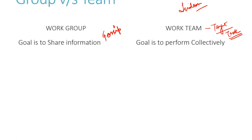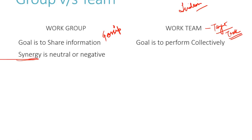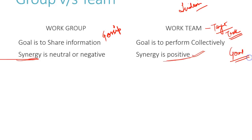The next point is synergy. In a group, synergy is either neutral or completely negative. On the other side, when we talk about a team, synergy should always be positive. This positive synergy is very important because to reach a particular goal, all people have to be positive and focused. Groups ke saath mandatory nahi hai, kyunki groups bahut informal in nature hain.